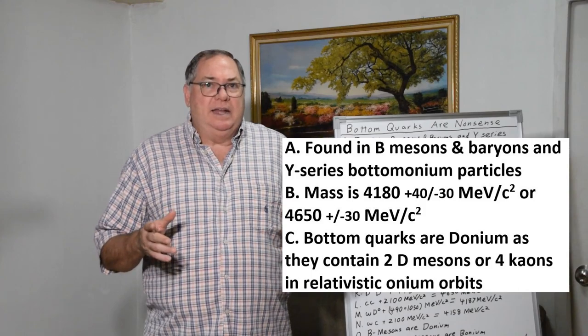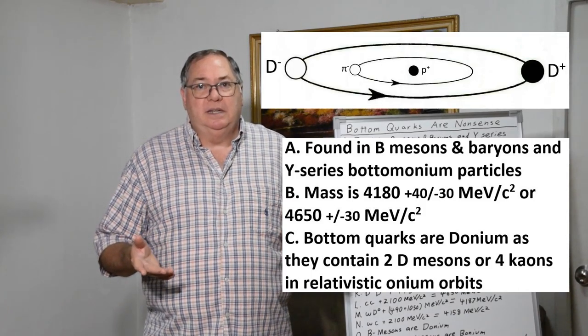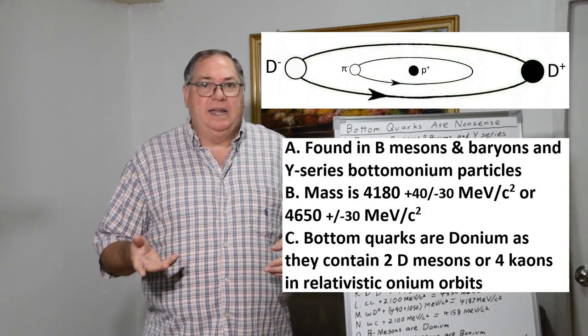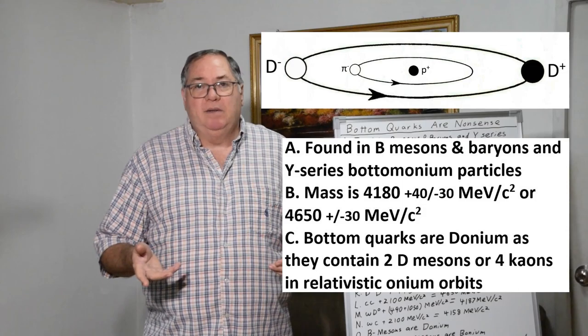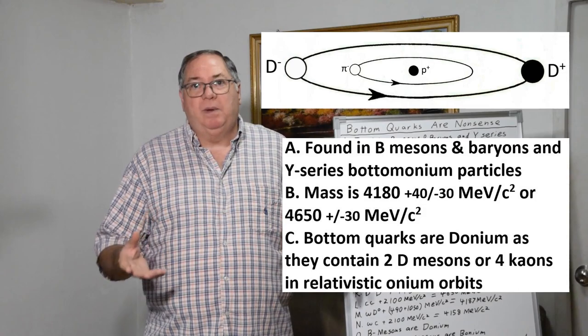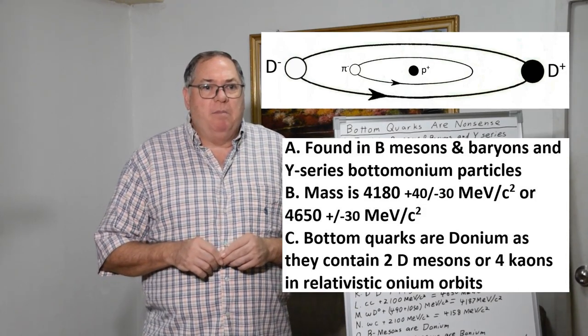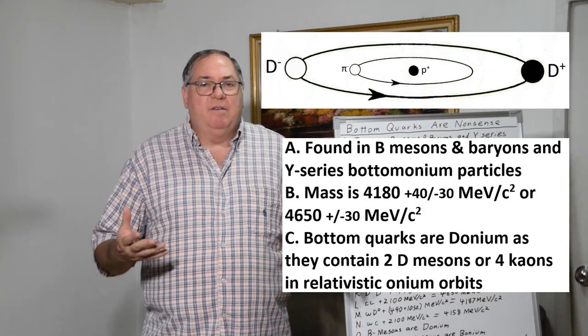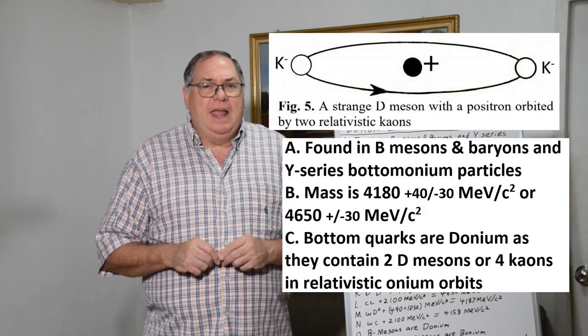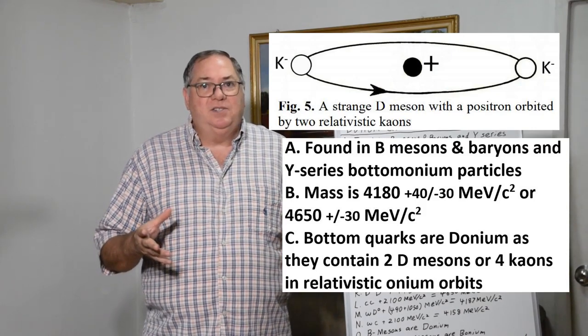In reality, the bottom quark is a donium resonance. It's two D mesons or the equivalent, or it contains four kaons. Sometimes there'll be two kaons in the orbit and then two kaons forming a D meson particle around it. But in general I think of them as donium resonances.